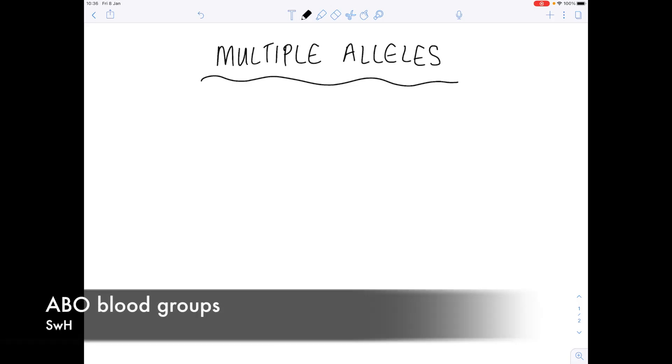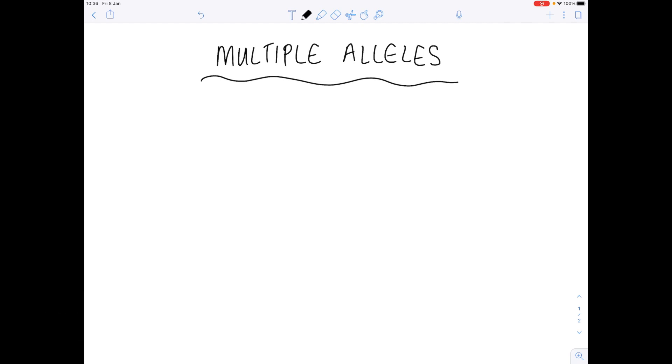In this A-level biology video we're going to be looking at a genetics topic called multiple alleles and we're going to use blood grouping to actually illustrate this point. So really if you've seen questions about blood groups this is the video you need to be watching.